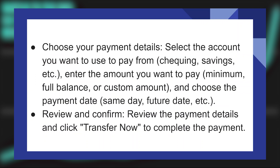Then select the account you want to use to pay from — checking, savings, etc. Enter the amount you want to pay: minimum, full balance, or custom amount. And choose the payment date: same date, future date, etc.